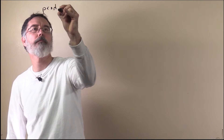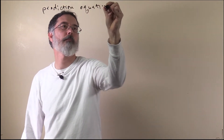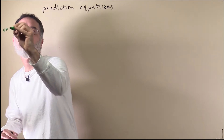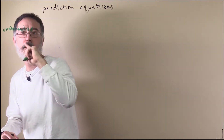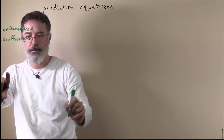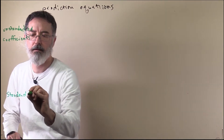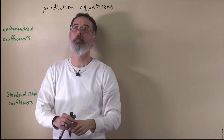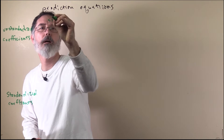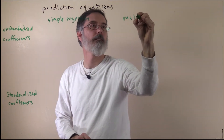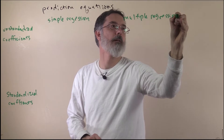I am going to talk about prediction equations with multiple regression. We will want to consider the unstandardized coefficients and the standardized coefficients — both versions. I am going to remind you what the simple regression version was like, and then add, for comparison, the multiple regression version.